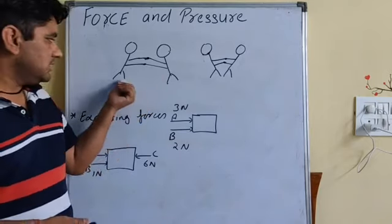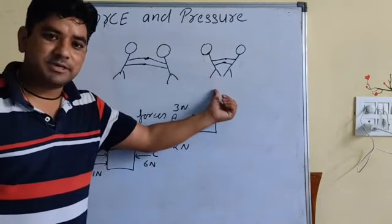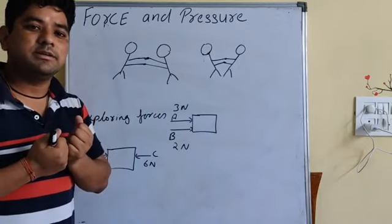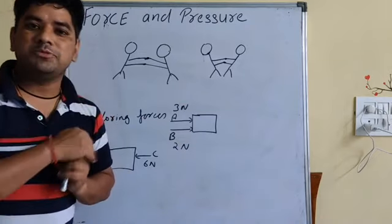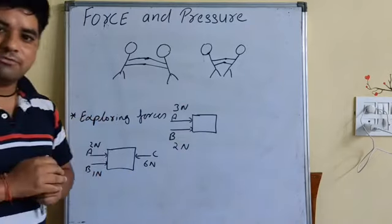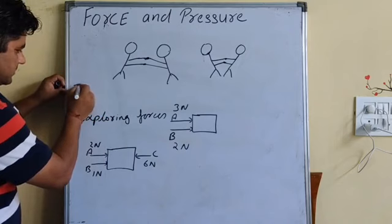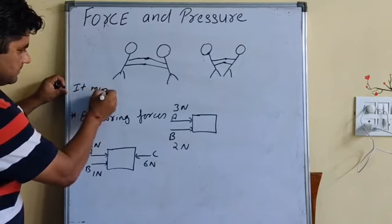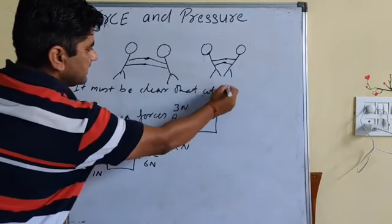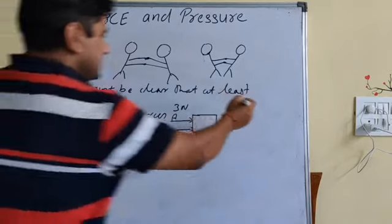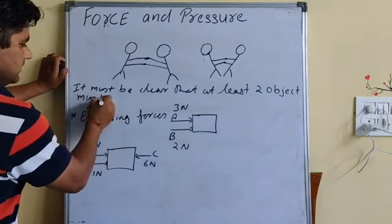Now, looking at diagrams of two boys — one is pushing the other, and in another figure both are pulling each other. From these two diagrams, we come to know that at least two objects must be present and must interact for a force to come into play.